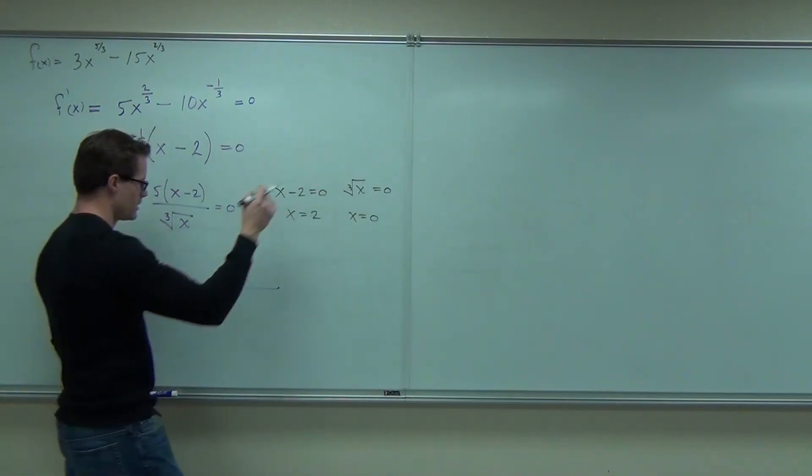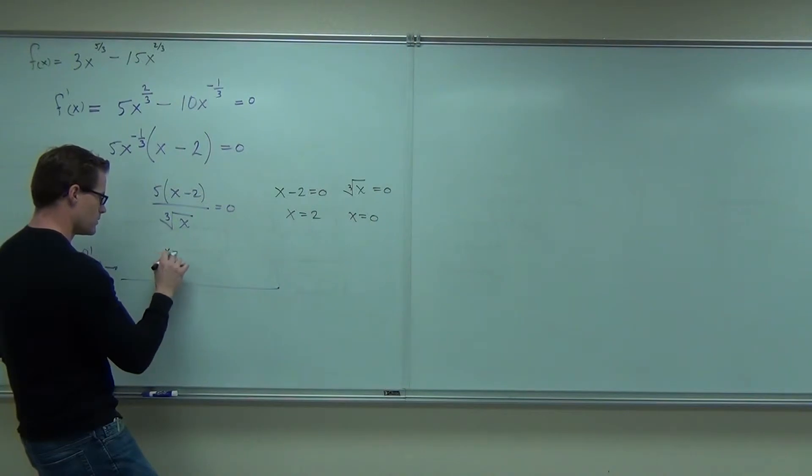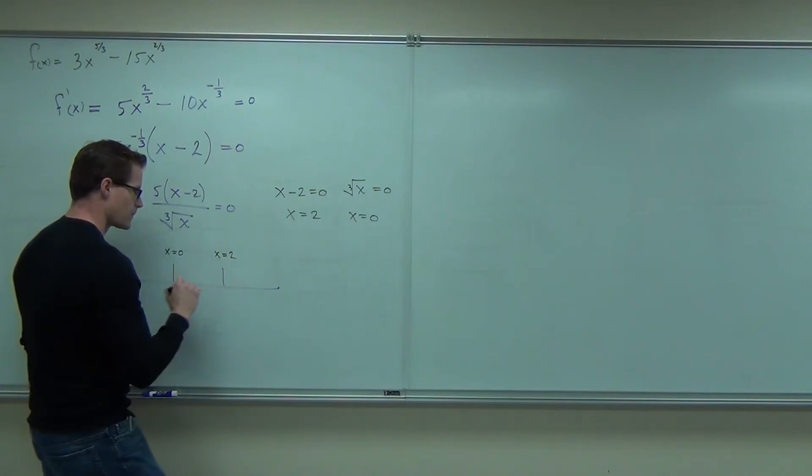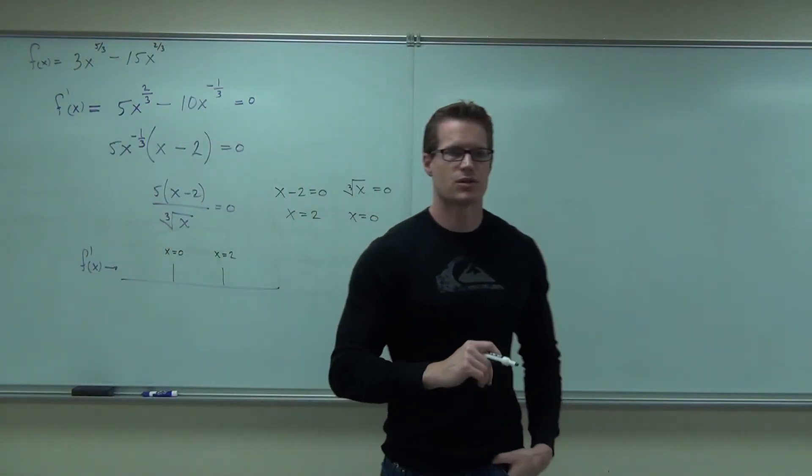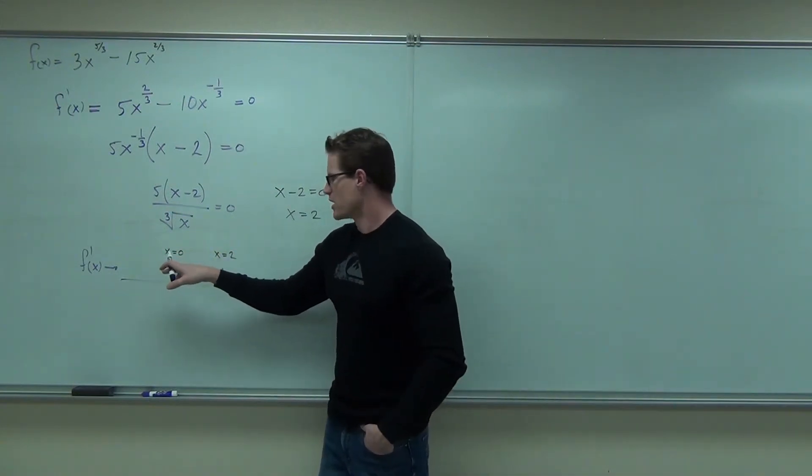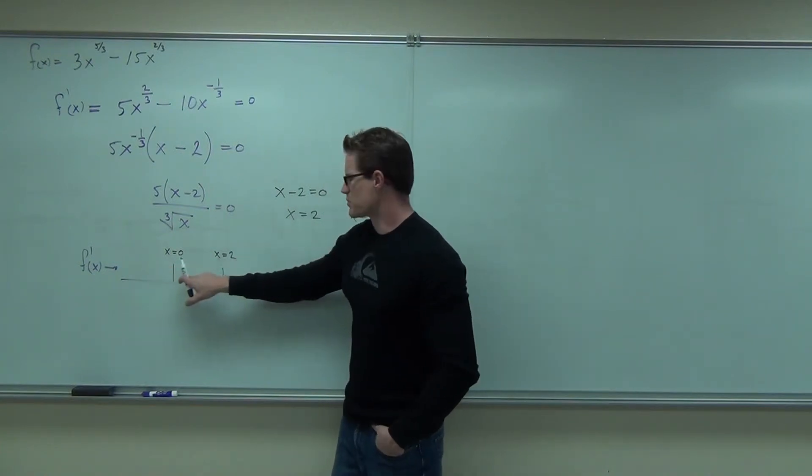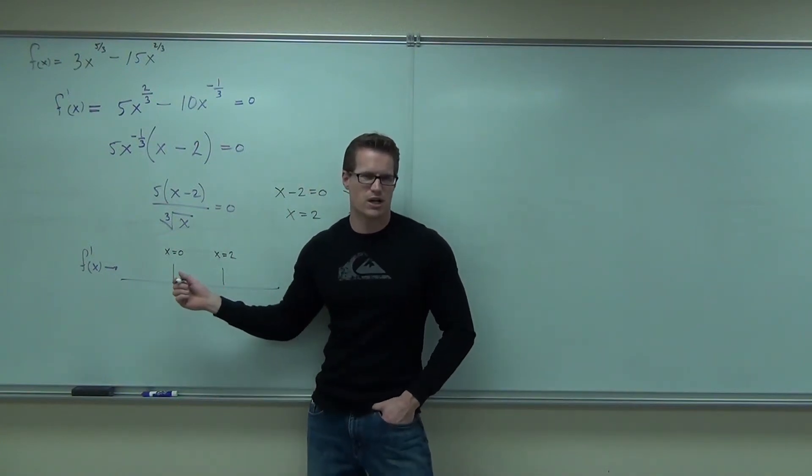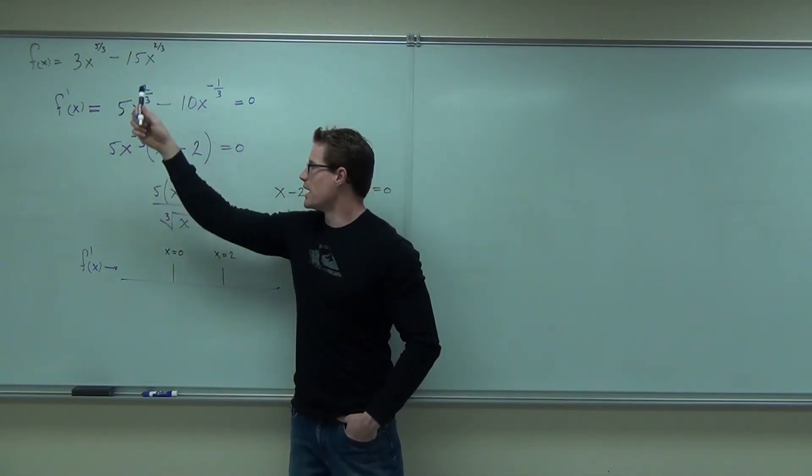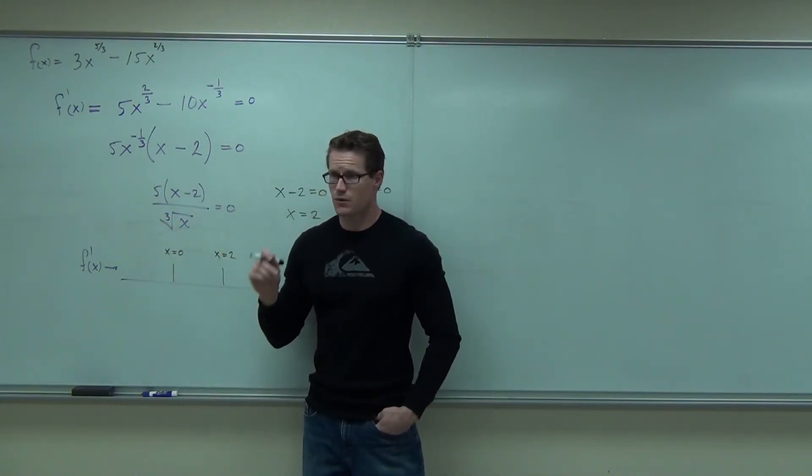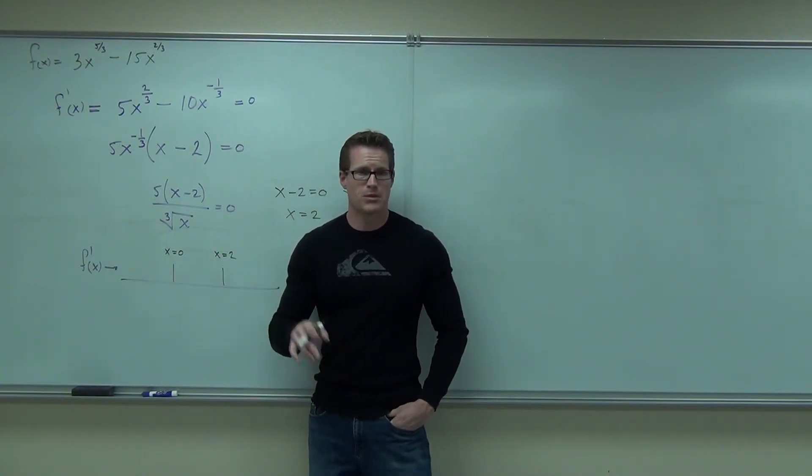We'll have some critical numbers. Now, something may or may not happen here, but it might. How many regions do we have? Regions. So, we're going to check a point. A number in each of those regions. This one, you'd probably pick negative one. This one, you'd probably pick one. This one, you'd probably pick three. So, let's check those. Now, my question is, where do I check them? Do I check them in my original or in my first derivative? Original will give me points. First derivative will give me slopes. The slope will tell me increase or decrease, which is what I'm looking for. You remember that this is supposed to give me increase and decrease, right?